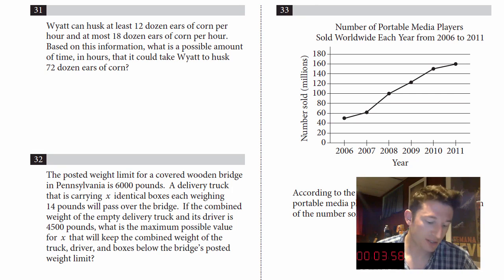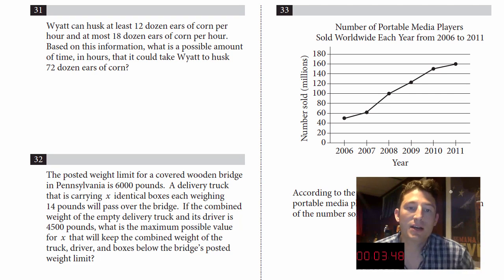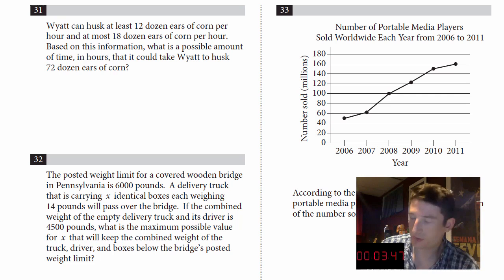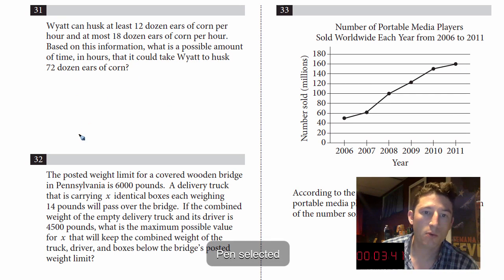Wyatt can husk at least 12 dozen ears of corn per hour and at most 18 dozen ears of corn per hour. Based on this information, what is a possible amount of time in hours that it could take Wyatt to husk 72 dozen ears of corn? Well, there's a real simple way I'm going to do this problem and I'm just going to set up a proportion.